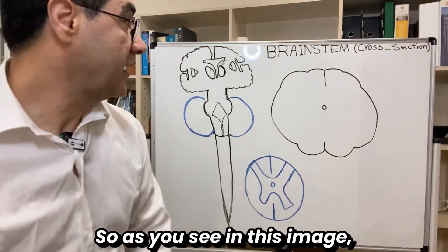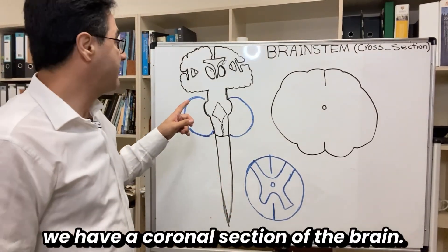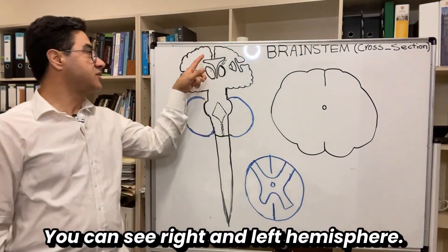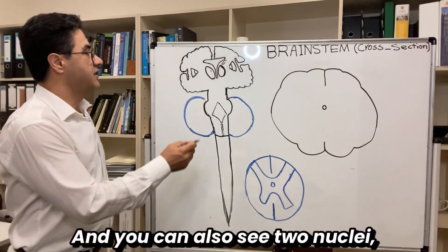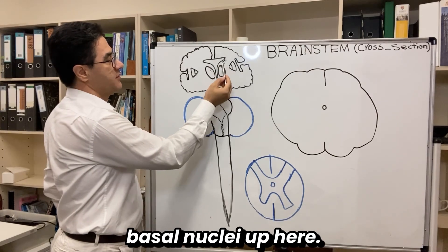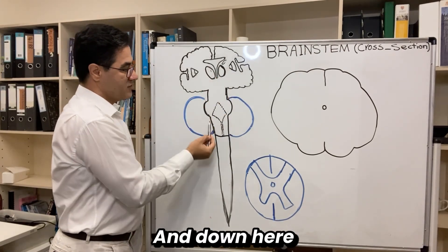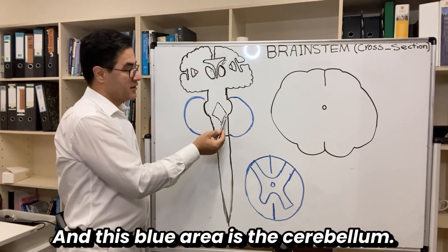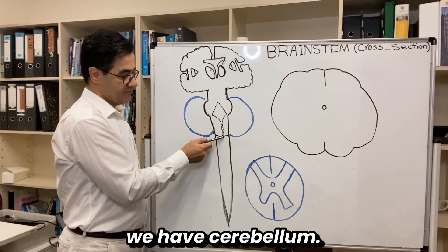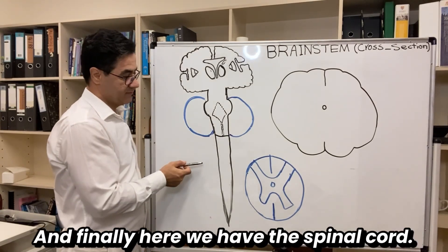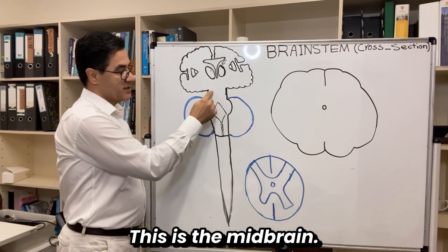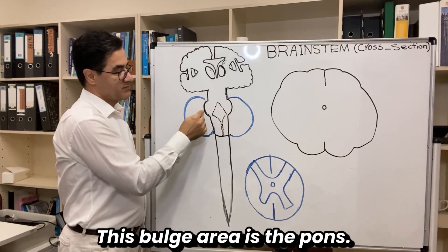In this image we have a coronal section of the brain. You can see the right and left hemispheres, two basal nuclei, the thalamus, and down here the brain stem. This blue area is the cerebellum at the back of the brain stem, and finally here we have the spinal cord. Today I'm going to focus on the medulla oblongata — this is the midbrain, this bulge area is the pons, and down here we have the medulla oblongata.